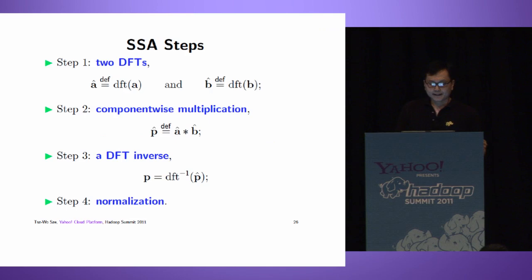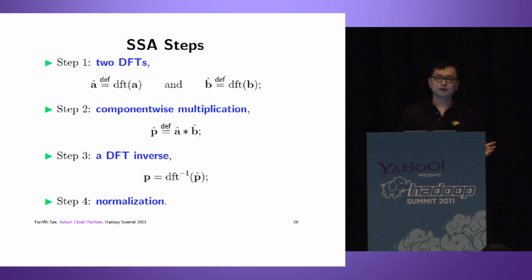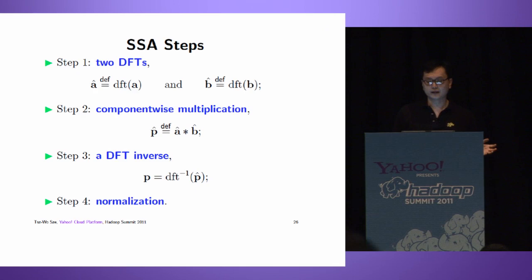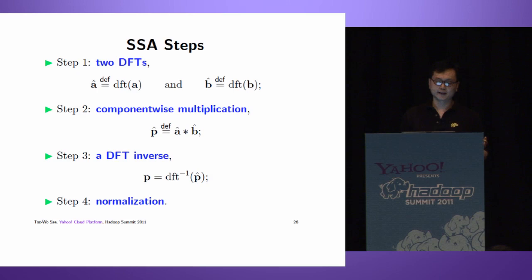Here are the steps of SSA. We have two input integers. First step: compute two DFTs. Then compute component-wise multiplication. Then compute DFT inverse - here the DFT inverse P is the product polynomial. However, the coefficients may be too large, and we need to perform a final step for normalization.